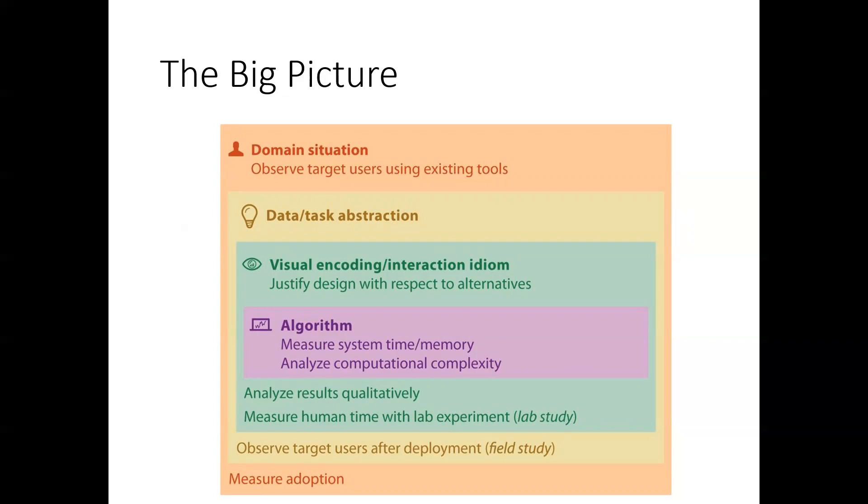For the visual encoding, you might want to do some human studies in a lab environment. UH Manoa has a lab that does precisely that to see how well people are performing the task with the computer system. At the data or task abstraction level, you want to observe the target users after deployment. That could be a field study or an ethnography to see how well they're actually performing the job. And then for the domain situation, a tool you can use is to measure adoption. Are people actually picking this up and using it?